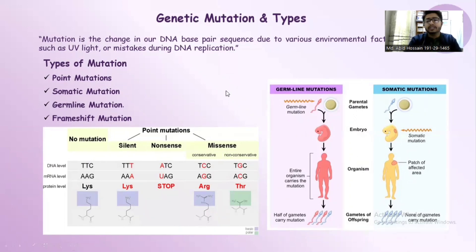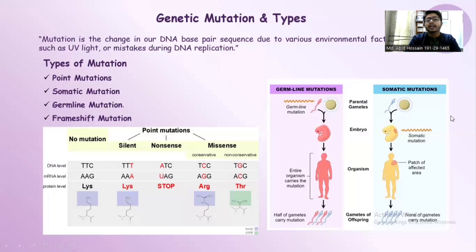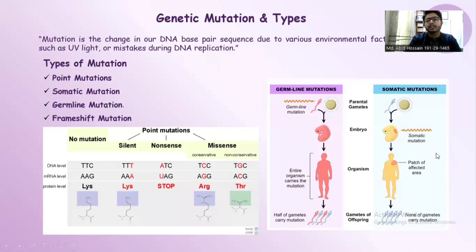For germline mutation, the mutation happens in sperm or gametes, and the entire organism carries the mutation. But in somatic mutation, it occurs in a specific portion of the embryo, so the whole organism is not carrying the mutation as in germline mutation.